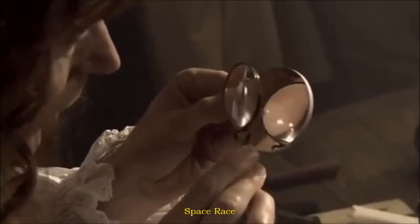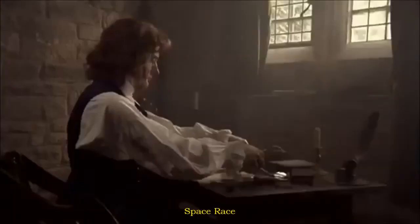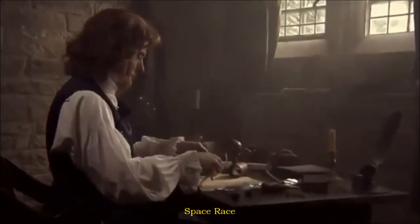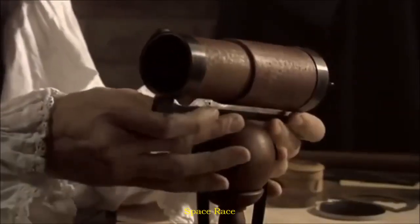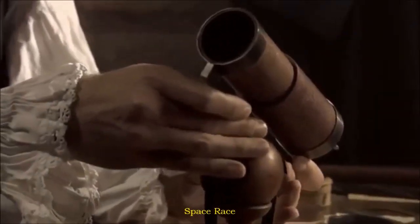Newton creates a tiny telescope only six inches long. He makes a curved mirror only one and a half inches across and inserts it into the base of the tube.